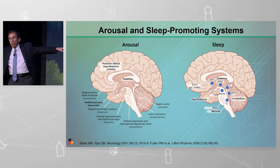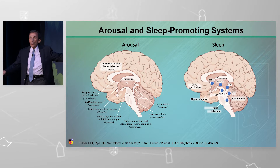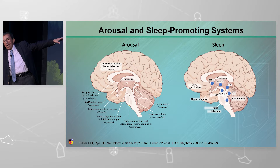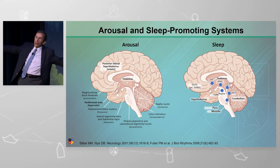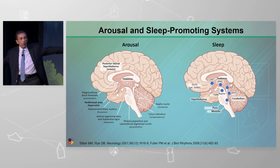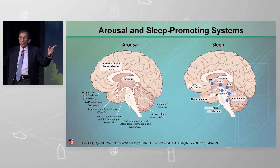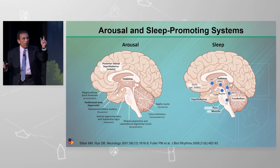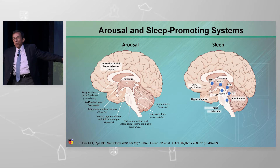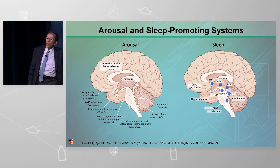The sleep system and the wake system. The orexins — those hypocretins — make sure that when the sleep system is winning, it stays that way. And they also make sure when you're awake, you stay that way. If the orexins are not there, you go back and forth and back and forth. That's what narcolepsy is — it's a lack of orexins. So during the day when you're supposed to be awake, you're going back and forth into sleep; at night when you're supposed to be asleep, you're going back and forth into wake.